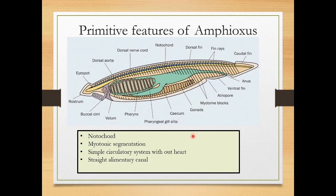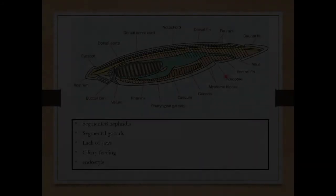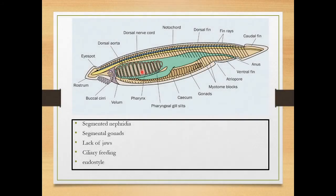There is also a straight alimentary canal starting from the mouth and ending in the anus — a simple canal with no complications. Segmented nephridia are present in each segment, which is a character of Annelida. Additionally, segmented gonads are present; in higher vertebrates only a pair of gonads exist, but in Amphioxus most segments possess gonads.